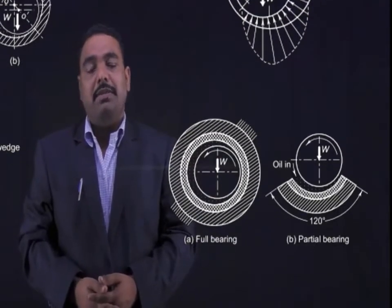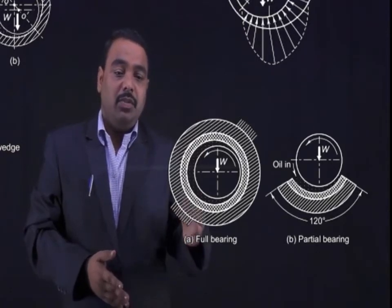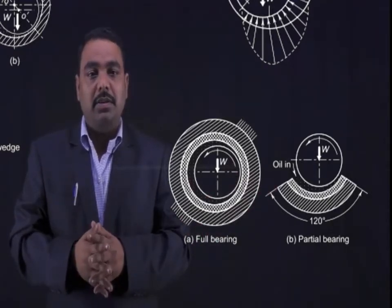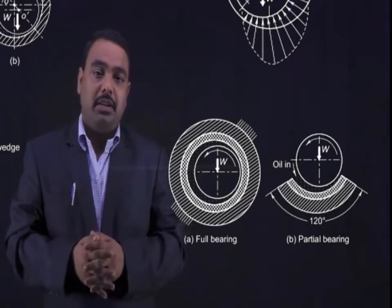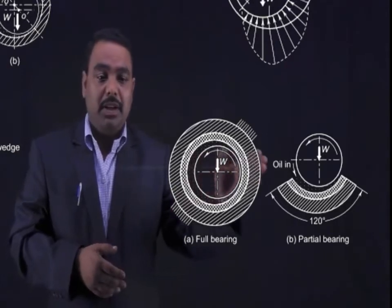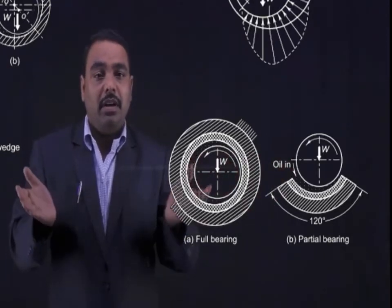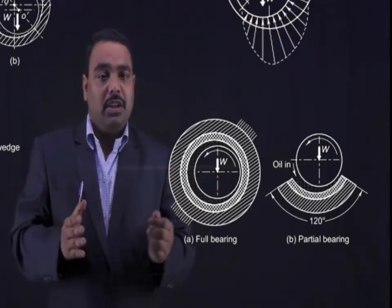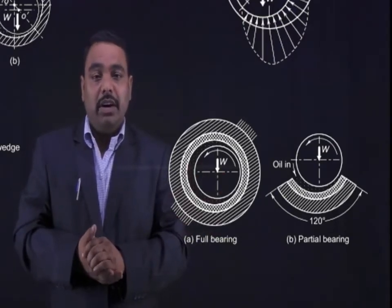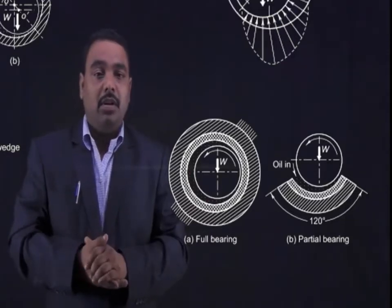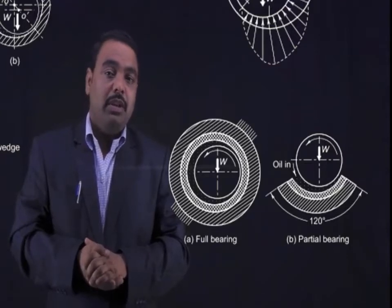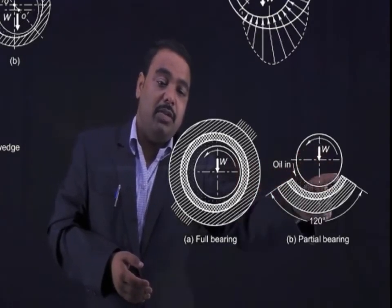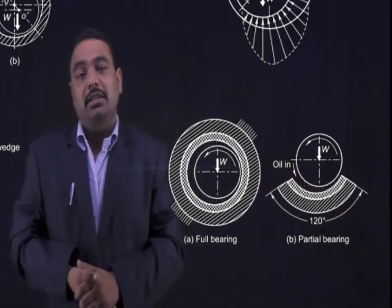If you classify the journal bearing, there are two types: one is full journal bearing and the second is partial bearing. Full bearing means the journal is completely inside the hub. But in partial bearing, some part of the hub has been placed and the journal rests on that, with the lubricant in side flow. Generally, the partial journal bearing angle of contact is taken as 120 degrees.